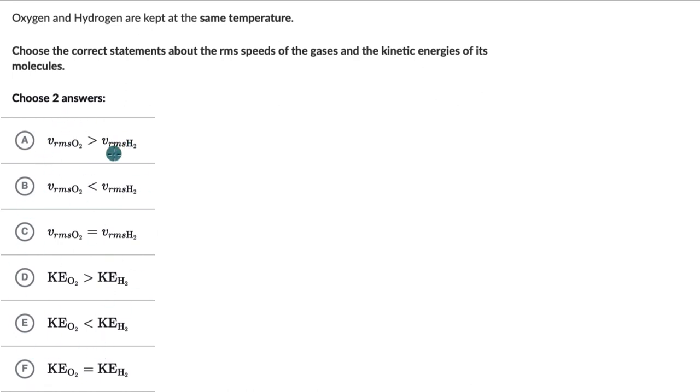So let's look at each option one by one and see whether it's correct or not. So for the first one, V_RMS of oxygen is more than V_RMS of hydrogen. Let's think back to what was RMS speed. RMS speed was proportional to, it is really proportional to temperature divided by the molecular mass of that gas.